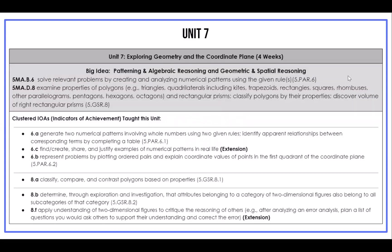Unit 7 has two AKS. Under the AKS, you will find the Indicators of Achievement or IOAs. We focus more on the IOAs because in order for students to show mastery of an AKS, they need the building blocks of the IOAs. We have also provided the state coding at the end of the IOAs, so that if you are looking up resources on the Georgia DOE website, you are able to find the state IOA that is related to the GCPS IOA.